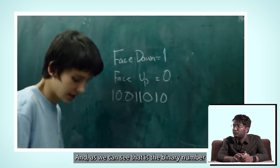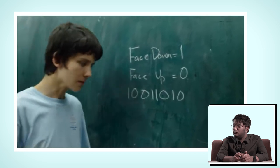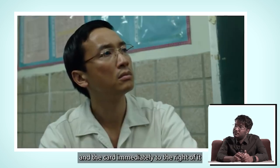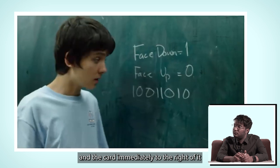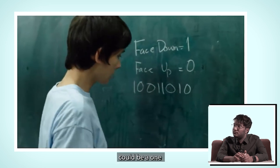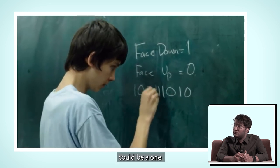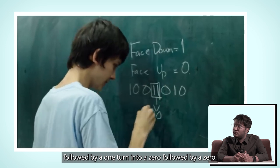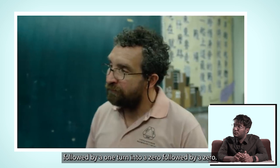As we can see, that is a binary number. And a move that consists of turning a face down card face up and the card immediately to the right of it could be that a one followed by a one or turning into a zero followed by a zero. Like that.